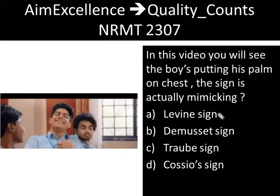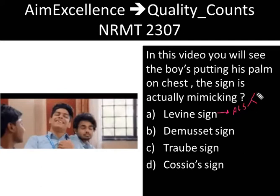Levin's sign is actually seen in cases of acute coronary syndrome, which is positive in both angina pectoris and AMI.